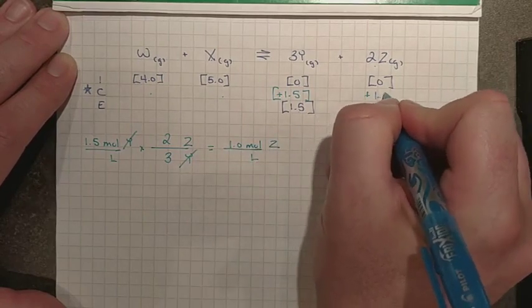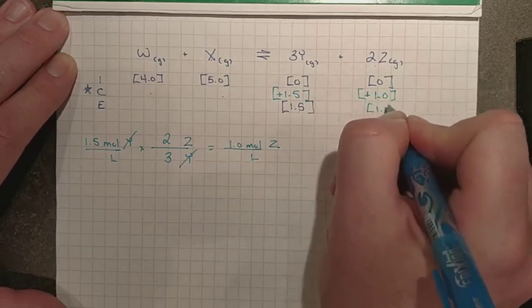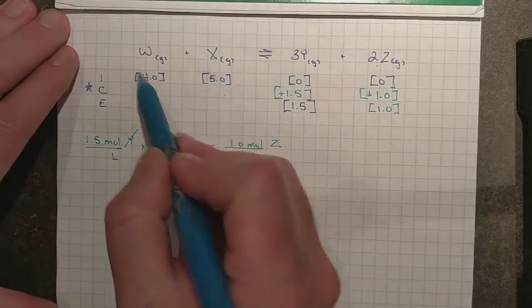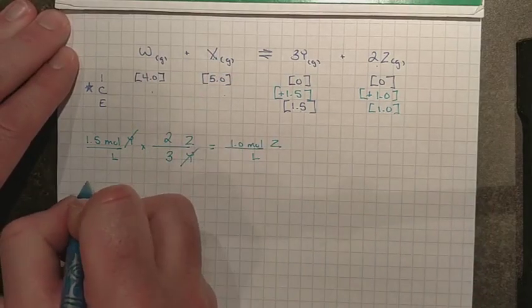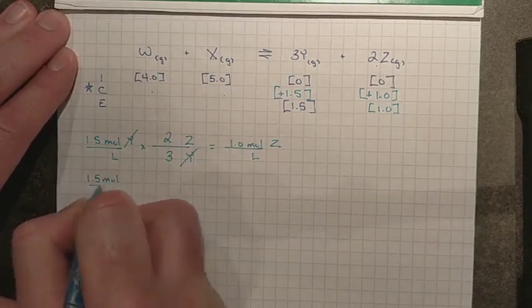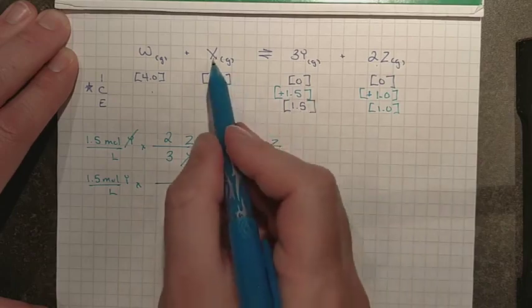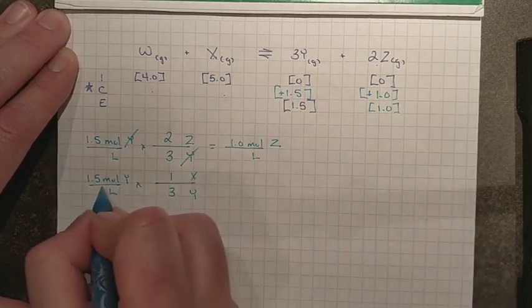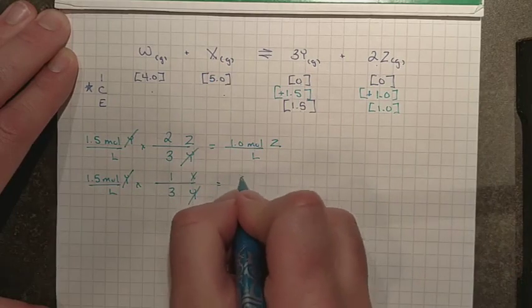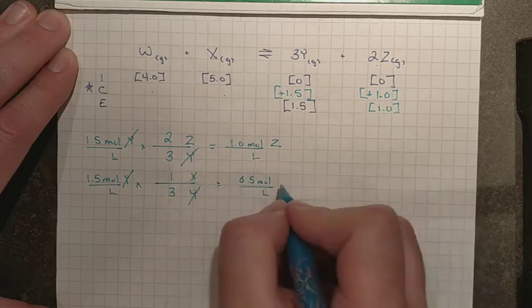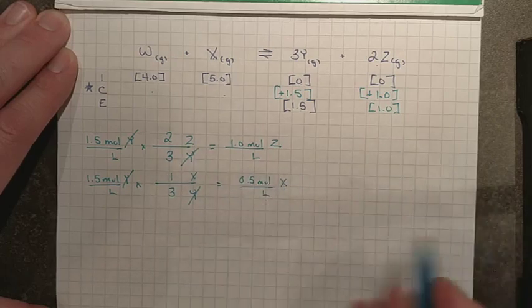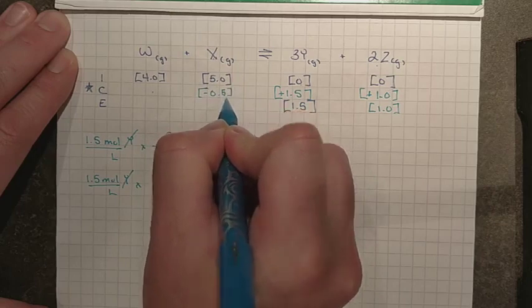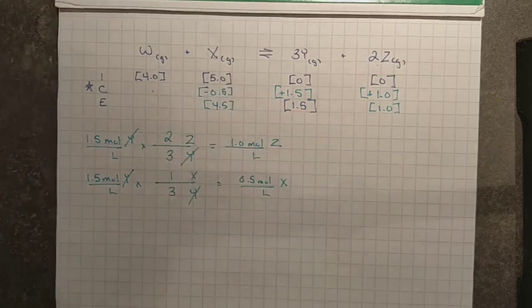The volume of this vessel would have to be constant, so we are allowed this shortcut of going straight from concentration to the mole ratio. Y disappears, and two-thirds of 1.5 would be a 1.0 mole per liter increase in Z. So, this guy should increase by 1.0 to leave us with an equilibrium concentration of 1.0. So, we need to extend what's going on for X and W, so I can start again with 1.5 moles per liter of Y, and I can take a look at the ratio between X and Y. X is 1 mole for every 3 of Y, and so one-third of 1.5 is a 0.5 mole per liter concentration change for X.